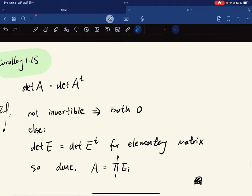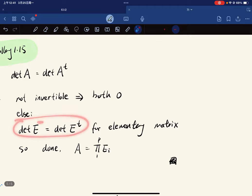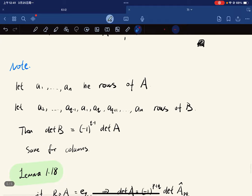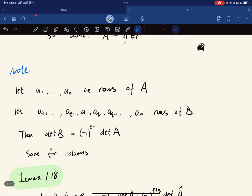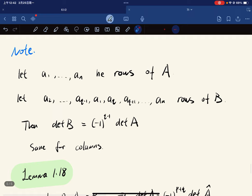So here's the corollaries. That's amazing to transpose because it holds because this holds for elementary matrices. And a one to an has rows of a. And we let this become rows of b. So if we're swapping, again, it's q minus one. It's q minus one swaps. And the result holds also for columns because if we consider a transpose.